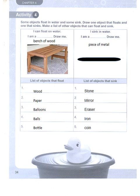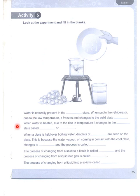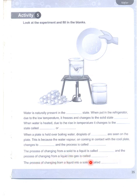Activity five: Water is naturally present in the blank state. When put in the refrigerator, due to low temperature, it freezes and changes to the solid state — blank. When water is heated, due to rise in temperature, it changes to the blank state called blank or blank. When a plate is held over boiling water, droplets of blank are seen — the process is called blank. The process of changing from solid to liquid is called blank; liquid to gas is called blank; liquid to solid is called blank.